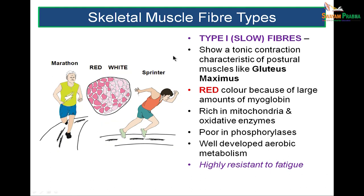Let's come to fiber types in skeletal muscle. Consider a sprinter — a fast runner — and a marathon runner. A marathon runner requires longer-lasting muscles with longer-lasting energy levels, so marathon runners have muscles that should not fatigue easily, whereas a sprinter needs muscles that act fast and may fatigue more easily. Type 1 slow twitch fibers, like the gluteus maximus, are red in color because they have a large amount of myoglobin. They are seen more in marathon runners and are highly resistant to fatigue.